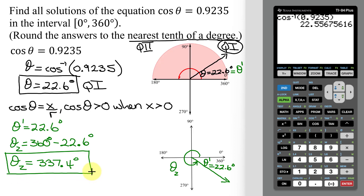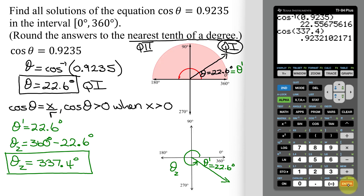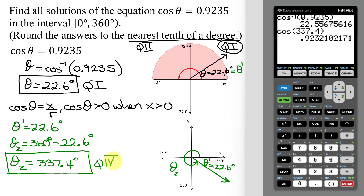How can we check it? We can check it on the calculator by finding the cosine of 337.4 degrees. Hit Enter. Is this the number I started with in my problem? It's close — it's not exactly the same, but that is because I rounded the answer. Since this is approximately the same as what I started with, that's a good confirmation I've done this problem correctly. I have two solutions: the first is 22.6 degrees, an angle in quadrant 1, and the second is 337.4 degrees, an angle in quadrant 4.